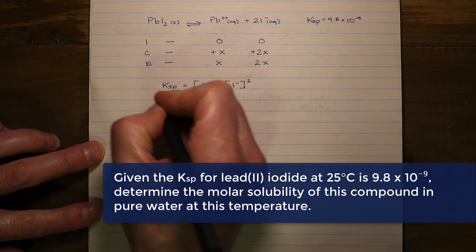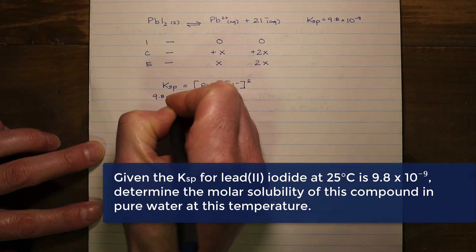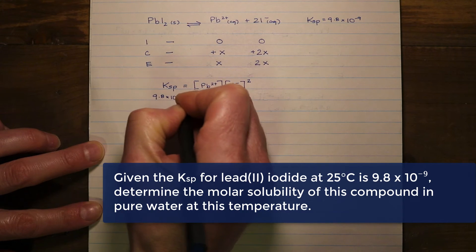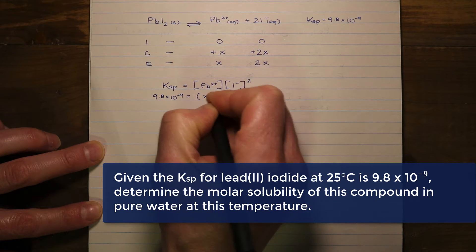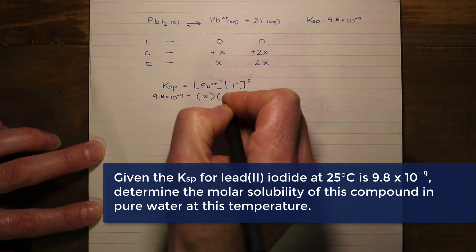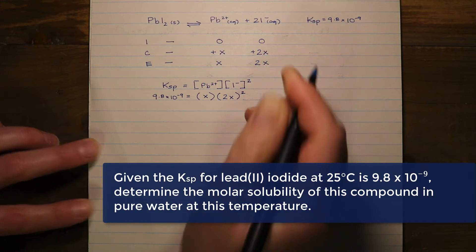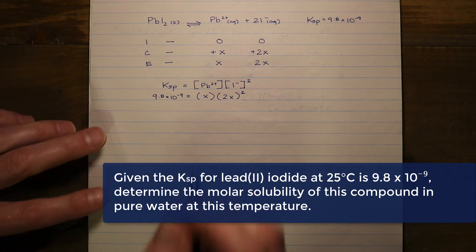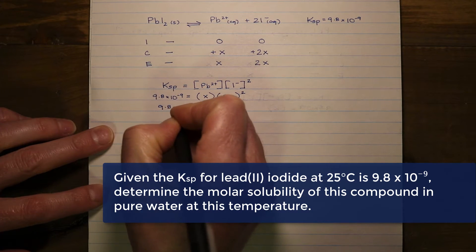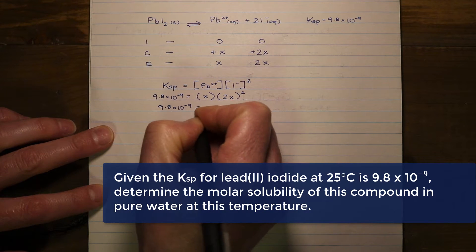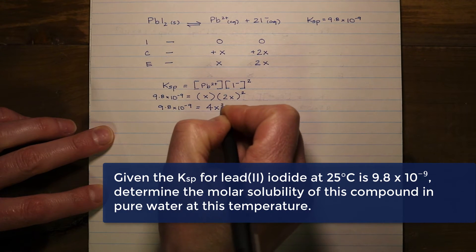Since we know the Ksp is 9.8 times 10 to the negative 9, we can input our variable x into the expression. Simplifying, everything in the bracket gets squared, giving 4x squared. Multiplying 4x squared by x gives us 4x cubed.